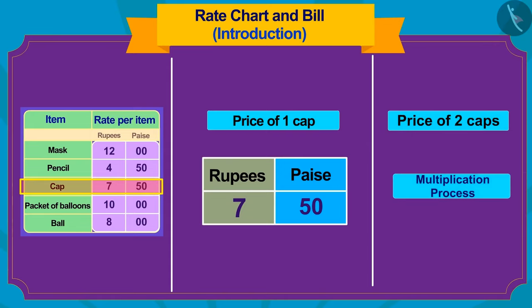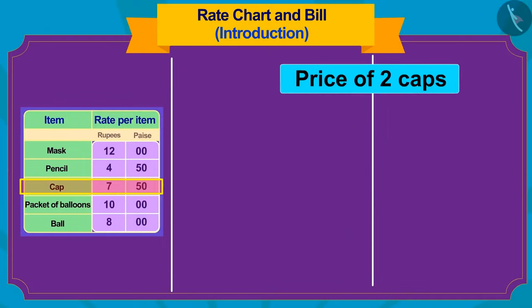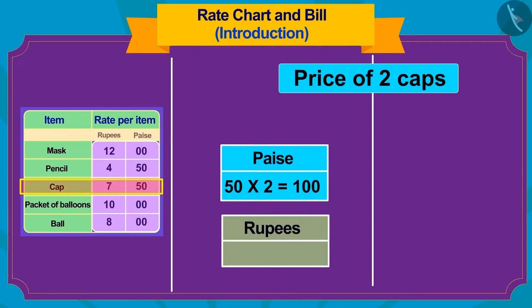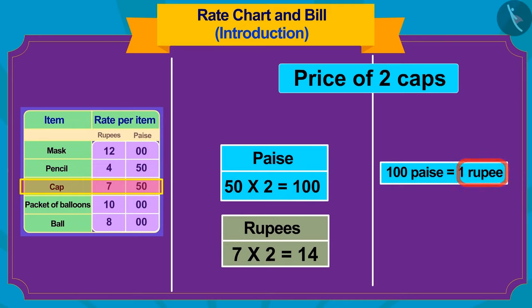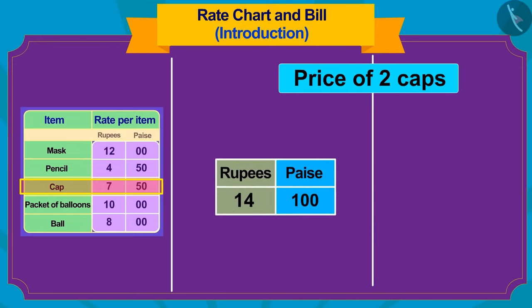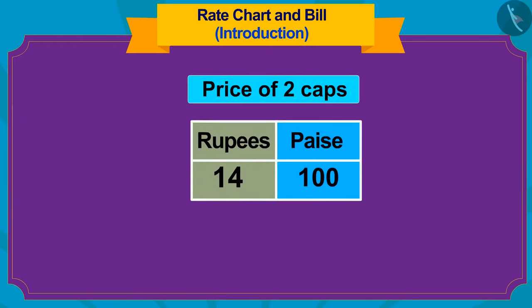Yes, we have to use the process of multiplication. First, we multiply the paise — multiply 50 by 2, which makes 100 paise. Now we multiply the rupees: 7 multiplied by 2 makes 14 rupees. But how many rupees is 100 paise? Absolutely right — 1 rupee! So if we add the rupees and the converted paise, the value of two caps would be 14 plus 1, which is 15 rupees 0 paise.